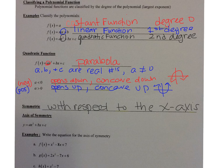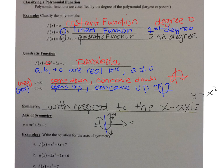If I graph the basic y = x², it is symmetric to the x-axis. When you graph a parabola, it has an axis of symmetry — that invisible line that goes right down the middle. There is a formula for the axis of symmetry: x = -b / 2a.